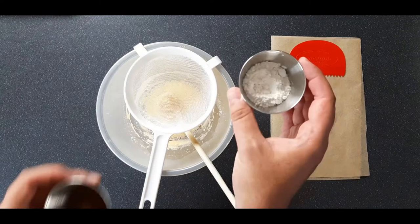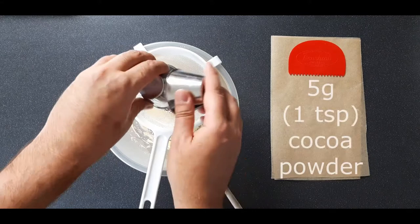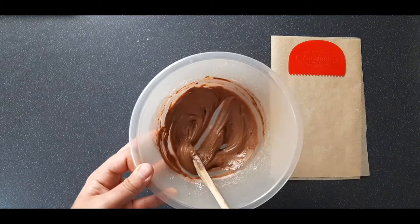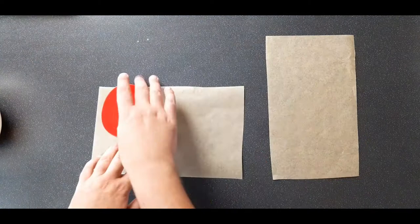The next step is to sieve in 20 grams or a sixth of a cup of soft flour and 5 grams or 1 teaspoon of cocoa powder. Beat this together well until you have a smooth paste. Make sure there's no lumps at this point.